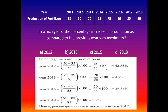For 2013: (70 minus 50) divided by 50 multiplied by 100 equals 40%. For 2015: it contains 75 tons and 2014 contains 55 tons, so (75 minus 55) divided by 55 multiplied by 100 equals 36.36%. For 2018: it contains 90 tons and 2017 contains 85 tons, so (90 minus 85) divided by 85 multiplied by 100 equals 5.9%.